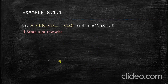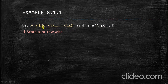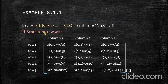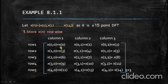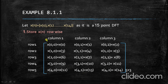The next step is to store X of N row-wise. Since this is a 15-point DFT, X of N contains 15 elements: X(0), X(1), and so on up to X(14). Storing row-wise means we complete each row before moving to the next. So the first row contains X(0), X(1), X(2); the next row has X(3), X(4), X(5); and so on up to X(14).